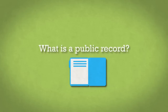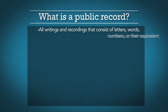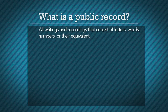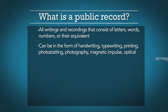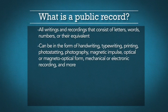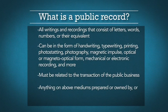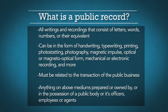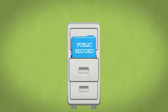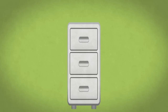Let's take a look at records now. What exactly is a public record? All writings and recordings that consist of letters, words, numbers, or their equivalent — any information that can be accessed at a later date. A record can exist in the form of handwriting, typewriting, printing, photo statting, photography, magnetic impulse, optical or magneto-optical form, mechanical or electronic recording, as well as many other forms of data compilation. When in doubt, it's a record. Any information pertaining to public business on any of these mediums, no matter how it's stored and regardless of physical form or characteristics, is considered a public record when prepared or owned by or in the possession of a public body or its officers, employees, or agents. Simply put, when any public business is documented in any way, shape, or form and is in the possession of a public body, it is officially a public record. When in doubt, it's a public record.